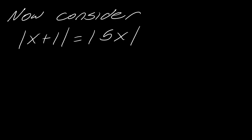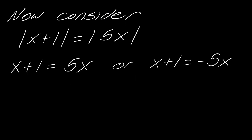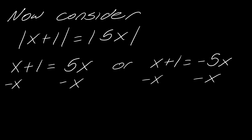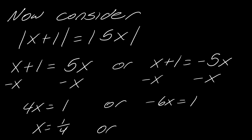Now, what if this became the absolute value of five X? We use the same logic. We break this into five X and then negative five X — positive side and negative side. Solving through, subtracting X's from all sides, I get four X equals one or negative six X equals one. Dividing, I get x equals one fourth or x equals negative one sixth.